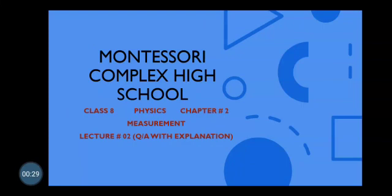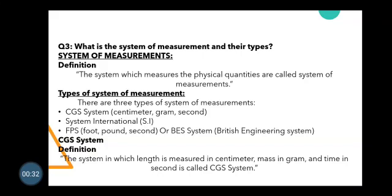The system of measurement is defined as the system which measures the physical quantities — such a system is called the system of measurement. Now let's look at the types of system of measurement.